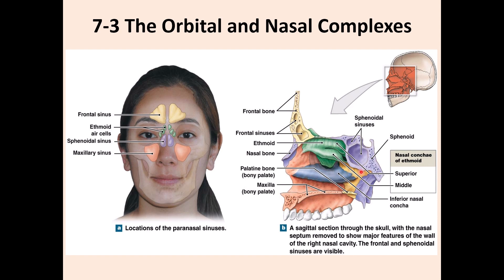This image shows the four paranasal sinuses: the frontal sinus within the frontal bone, the ethmoid sinus, the sphenoid sinus, and the maxillary sinus inside the maxilla. These sinuses contain air, which reduces the weight of the skull and therefore reduces pressure on the neck. They are also important for phonation — when these cavities are filled, the quality of sound changes.